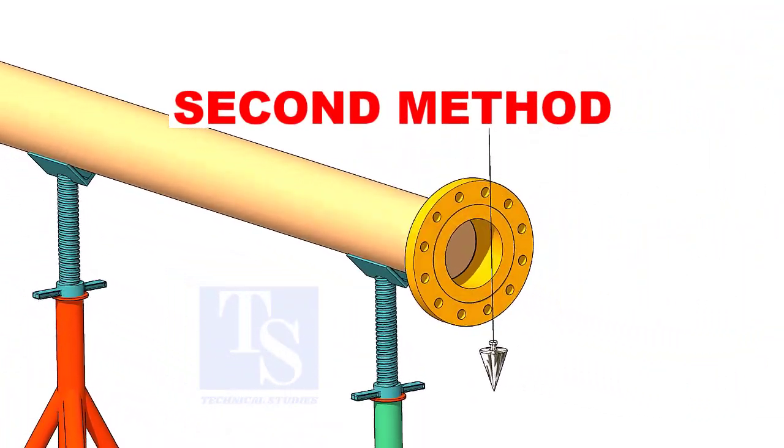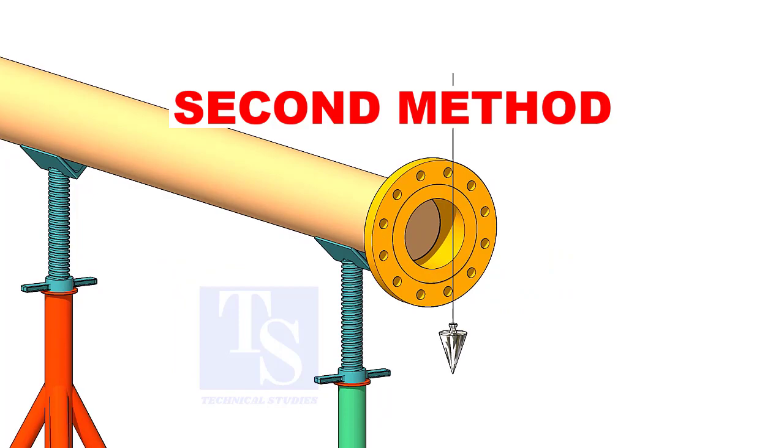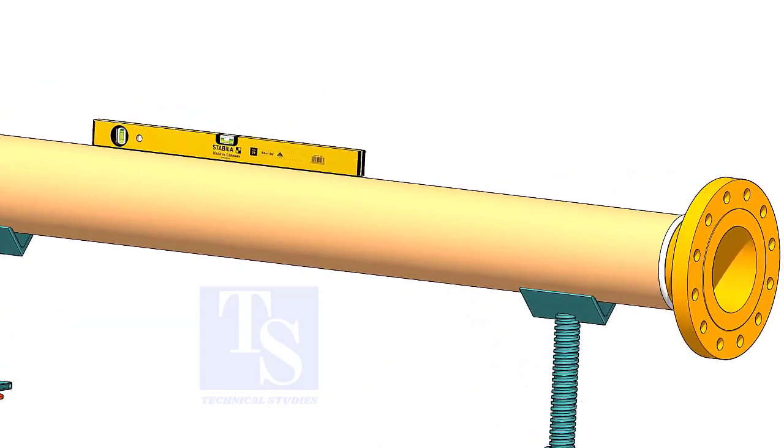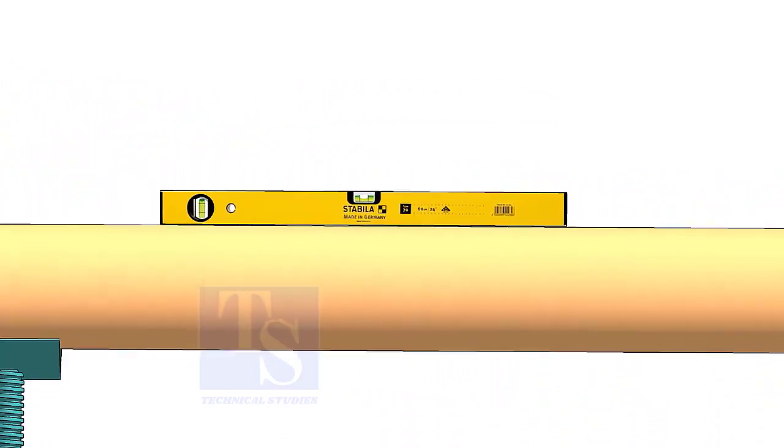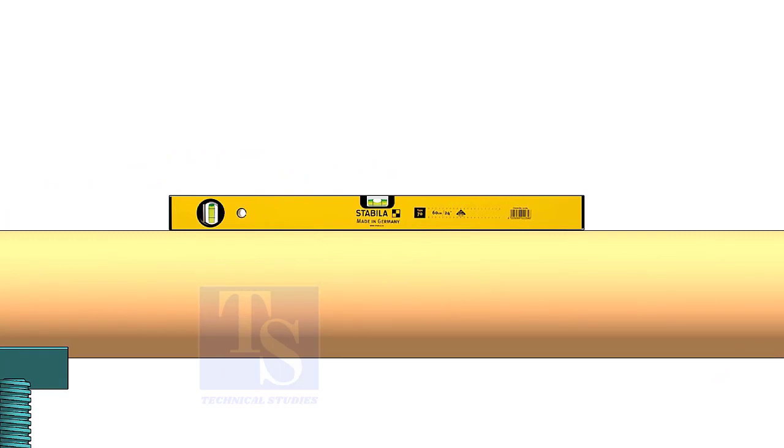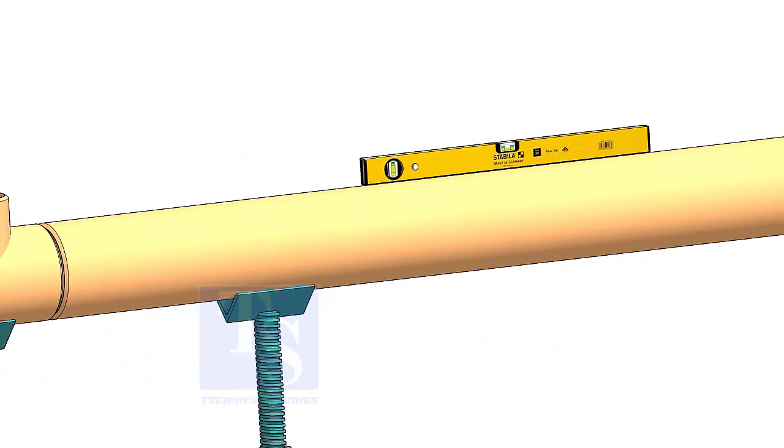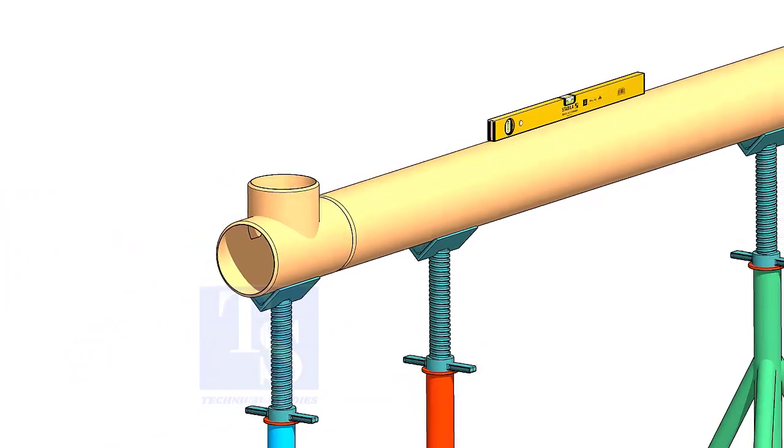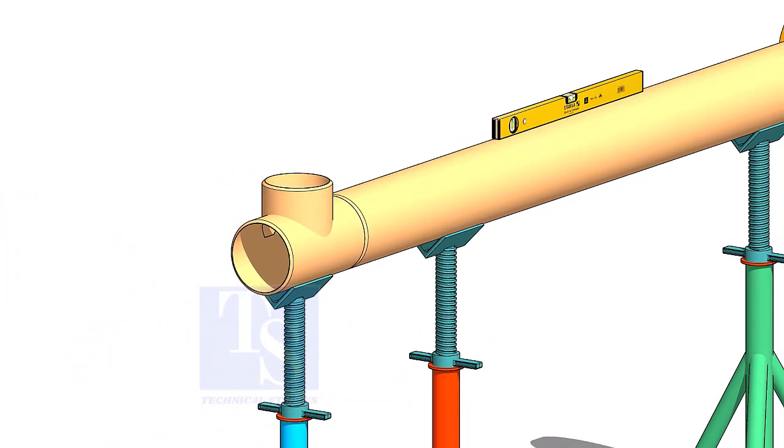Correct the flange plumbness. Level the pipe. Fix the clamp. Put the T on the support and put the gap rod.